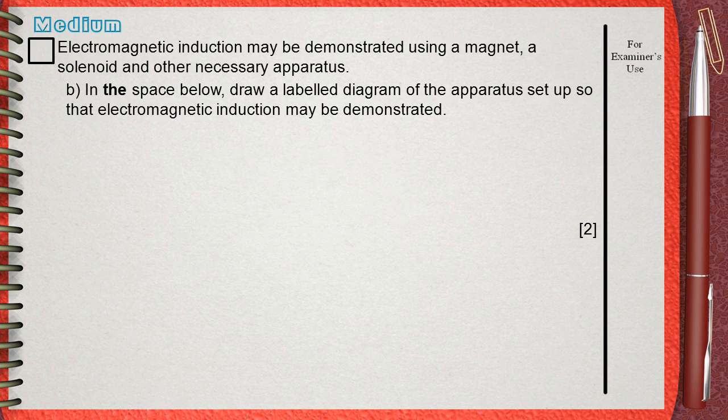In this part, he says that we have a magnet, solenoid and other necessary apparatus.